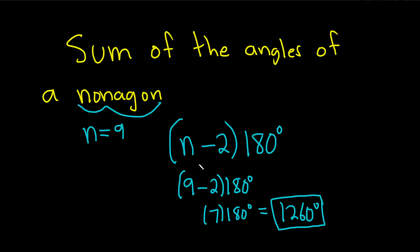So to do this problem, you basically just have to know two things. One, a nonagon has 9 sides. And then two, the sum of the angles of an n-gon is given by this formula.